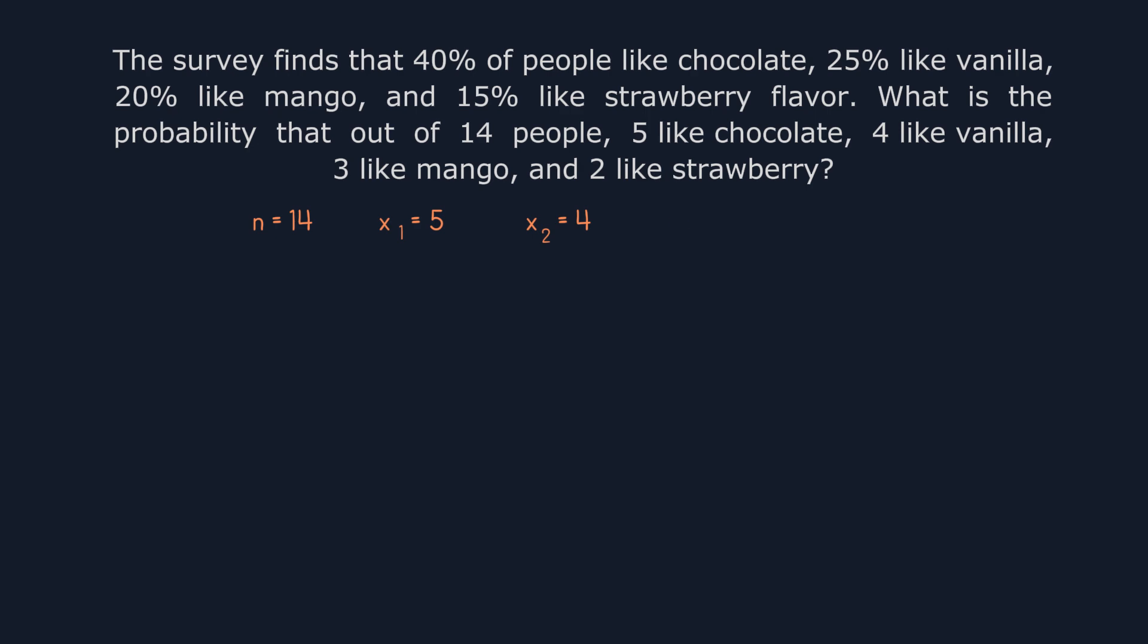The number of people who like mango, x3, is 3. And lastly, the number of people who like strawberry, x4, is 2. Now for the probabilities.